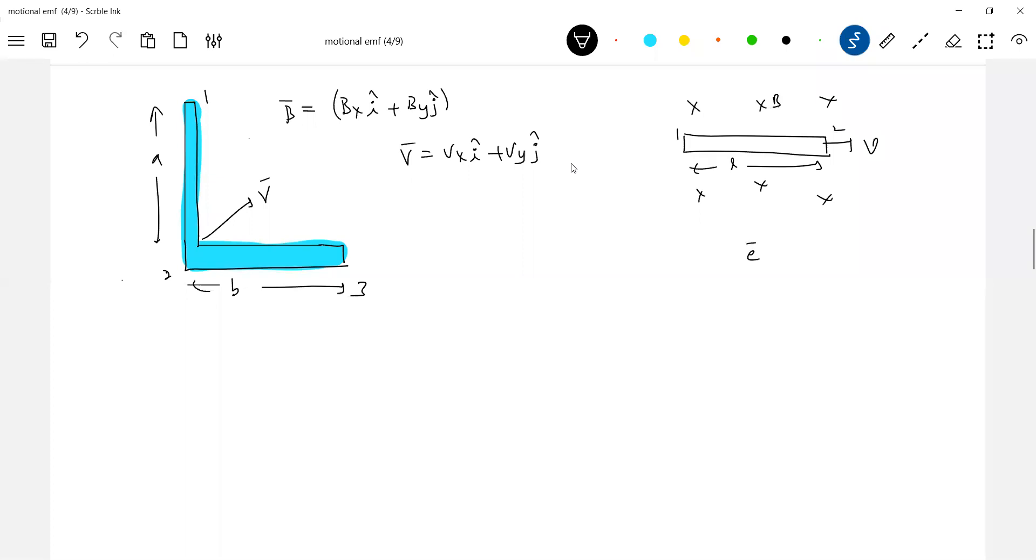Go back to this formula: E bar equal to v bar cross b bar dot l bar. V bar cross b bar - how will v bar cross b bar be? Check it. Curl v bar towards b bar, the term will be along y axis. So l bar dot i should be zero. Therefore no EMF induced across the rod one two.